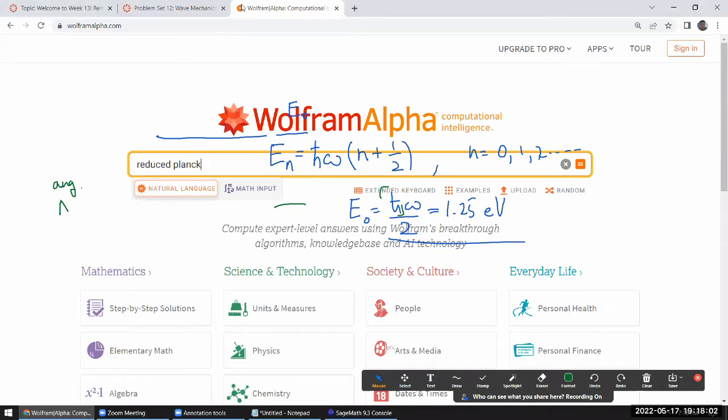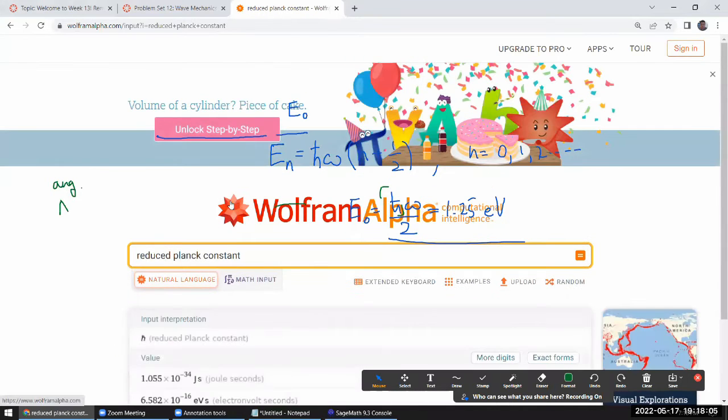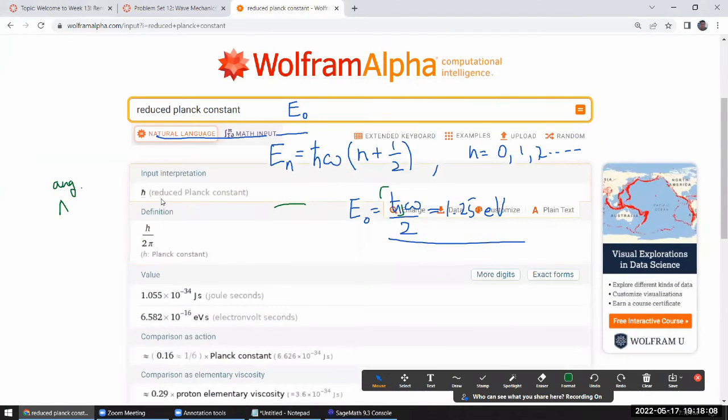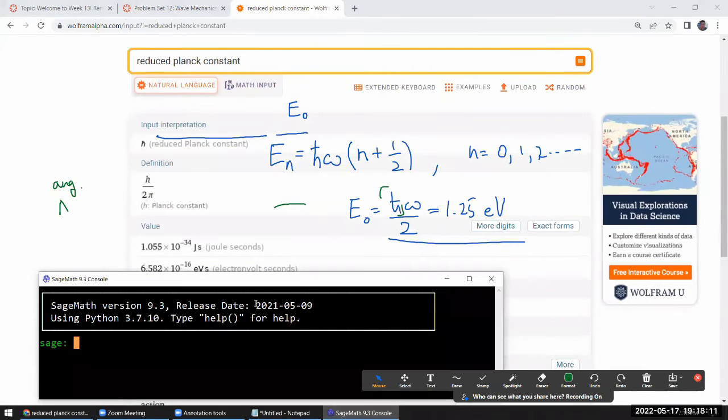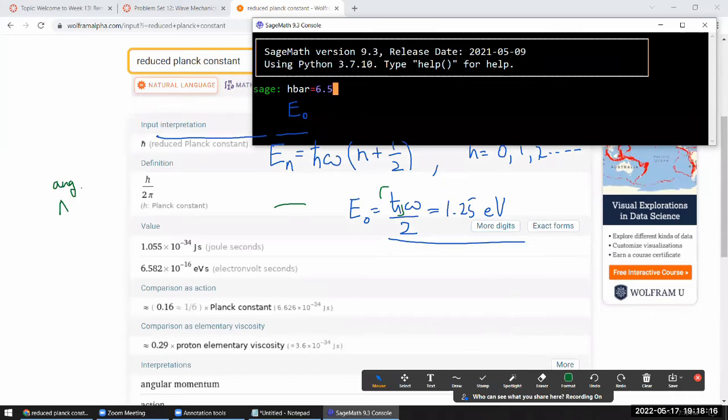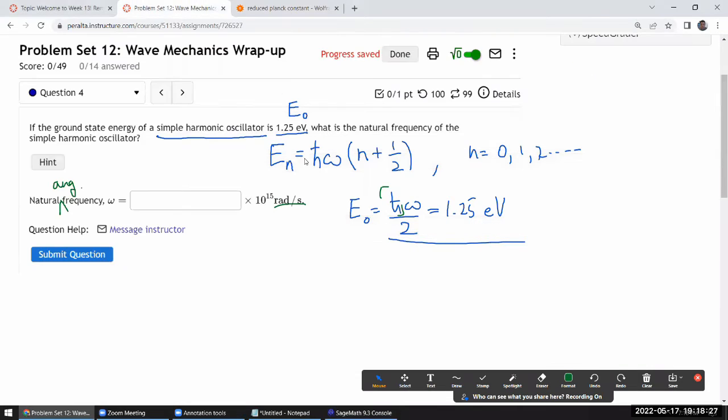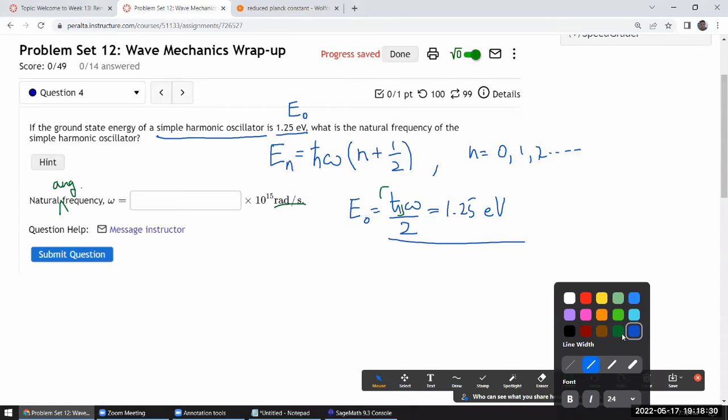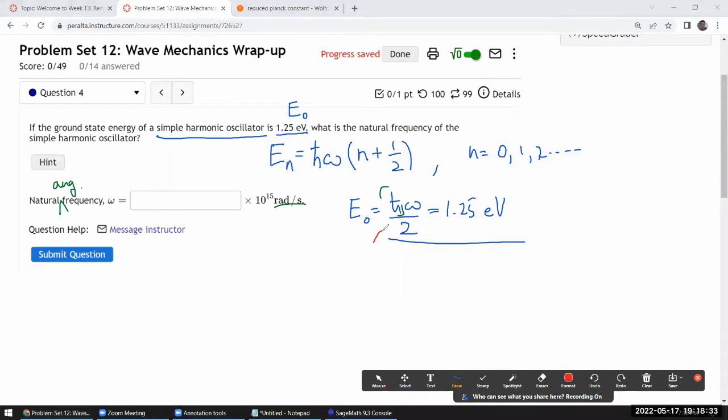Reduced Planck constant. I'm going to just program that into my calculator. So h bar in the electron volt unit, that's going to be h bar is equal to 6.582 times 10 to the minus 16 electron volt. So with that I think I still need a little bit more algebra. I need to solve this for omega.